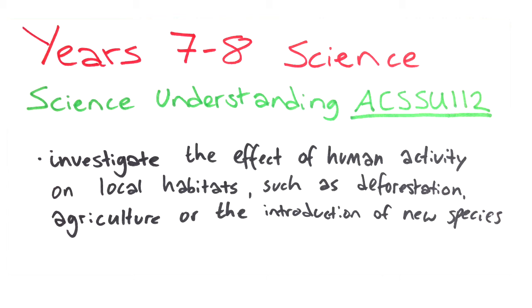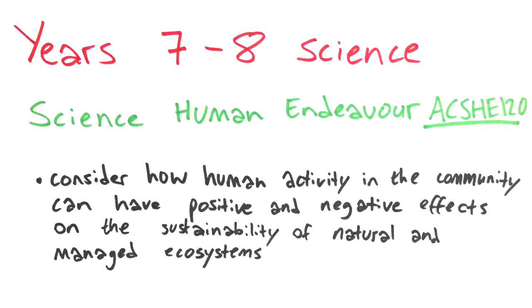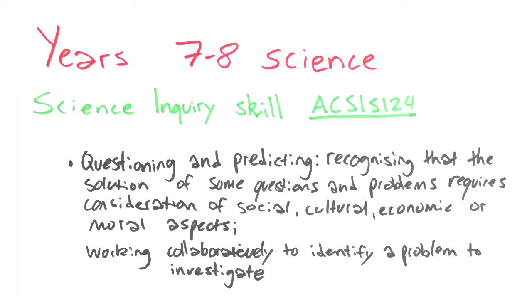We will be investigating the effects of human activity on local habitats by looking at particular environmental issues in society today. We will consider the broader implications on the sustainability of ecosystems and the environment, looking at both the positive effects and the negative ones. And finally we will look at current initiatives and consider how these solutions solve the various elements of the issue.